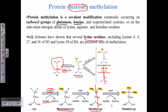A third layer of methylation is also possible, which will be called trimethyl lysine. As you can see, lysine can hold up to three different methylations at the same time, making lysine a very hot spot for methylation.